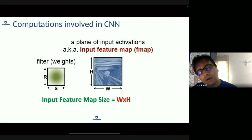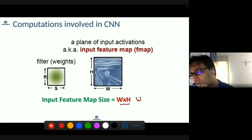Let's say you have a convolutional neural network, and you have an input of size W×H, which is known as the input feature map.